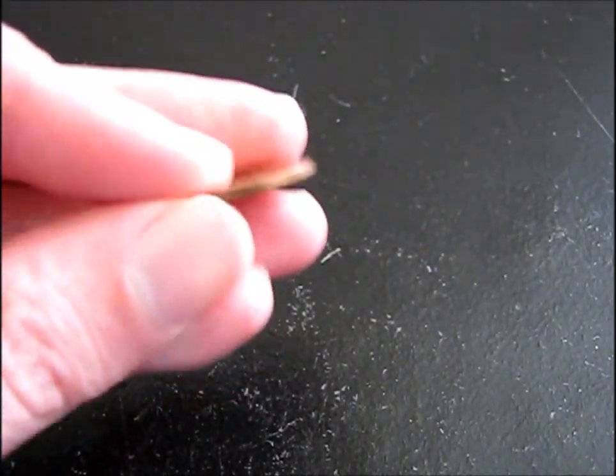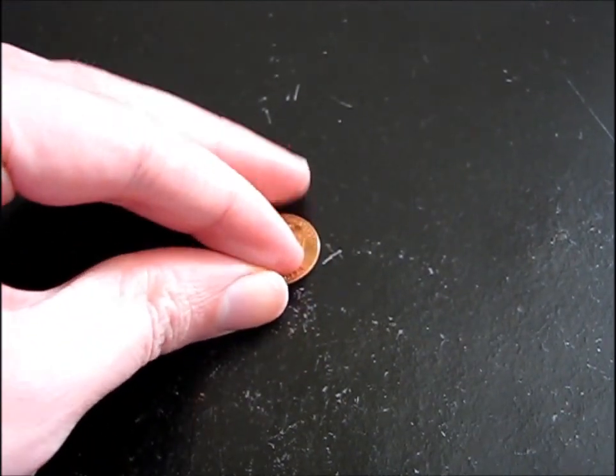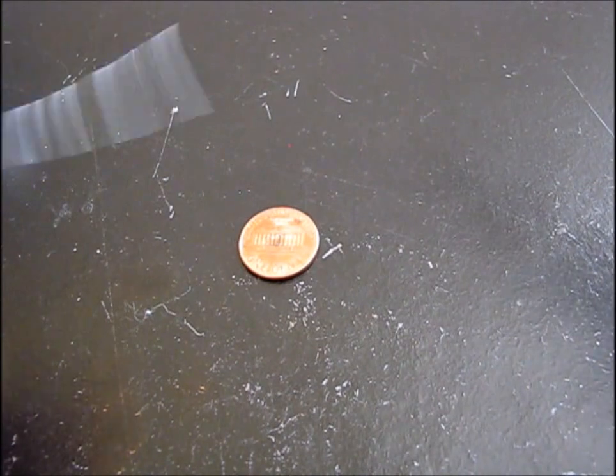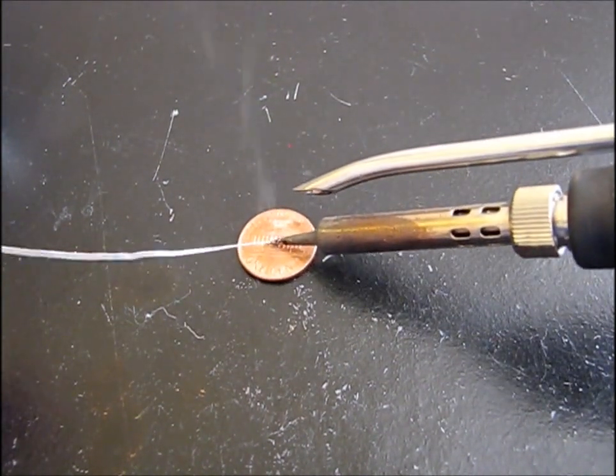When I'm soldering the penny, I typically use the tails side. The Lincoln Memorial has a lot of surface area, which helps the solder adhere to it.